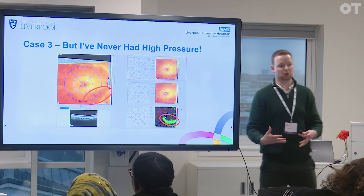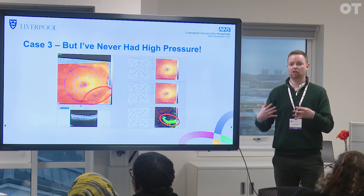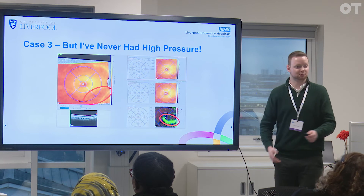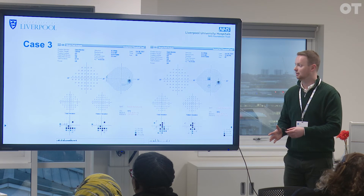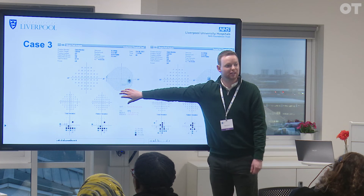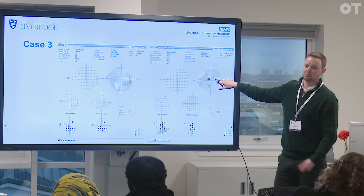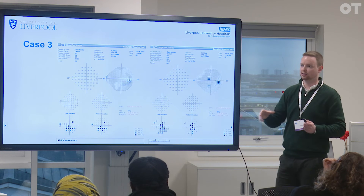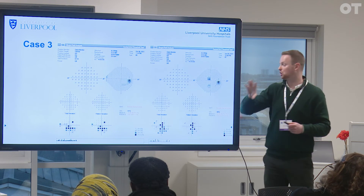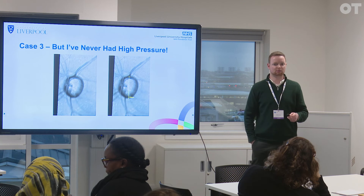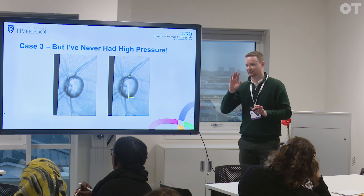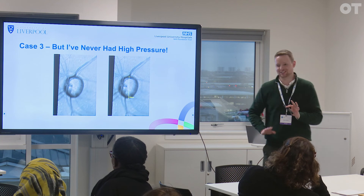So we've got structural loss in the infratemporal. Where would we expect our functional loss on visual fields to be? Supranasal — perfect. And, surprise surprise, this patient has got a new supranasal defect. This one I really do buy today. He's got that infratemporal structural loss which has manifested itself as a supranasal defect functionally. So for the right eye, it's probably progressive. At least I can go home and think that I've done an alright job.